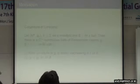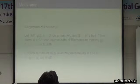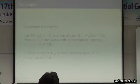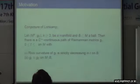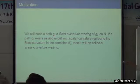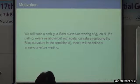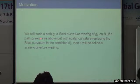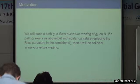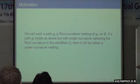So, for most Riemannian metrics, scalar curvature decreasing on a ball holds, but it's not completely settled. For convenience, we may call such a path a 'Ricci curvature melting of G0 on B.' Melting means it's like snow melting — I'm thinking of curvature decreasing as melting. If we have such a thing but with scalar curvature replacing Ricci curvature, then it will be called scalar curvature melting. In this talk, I will talk about scalar curvature melting.